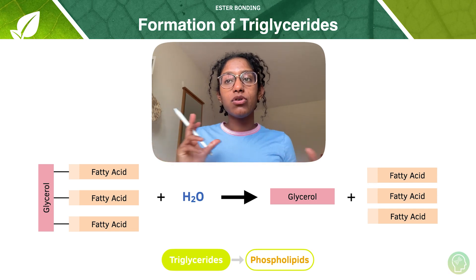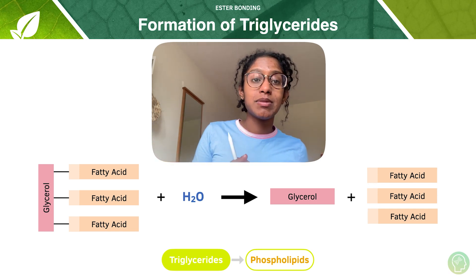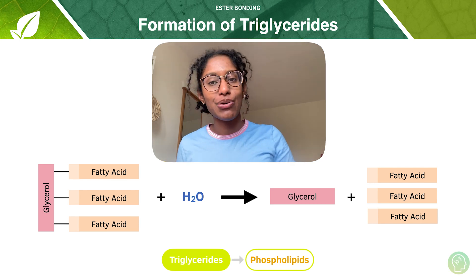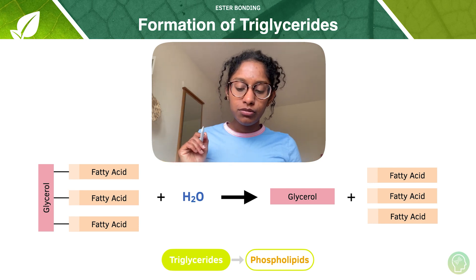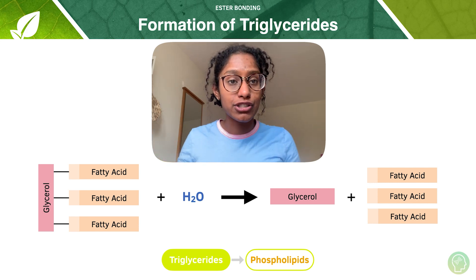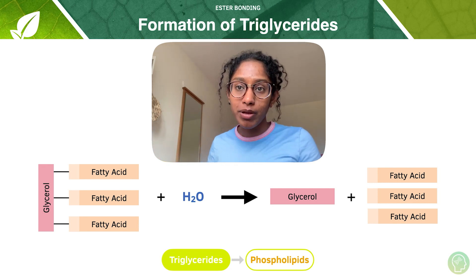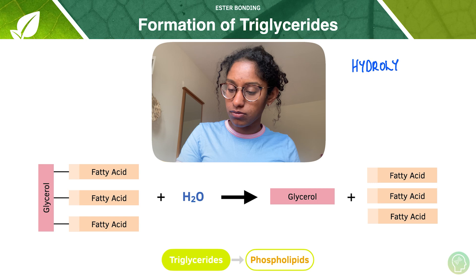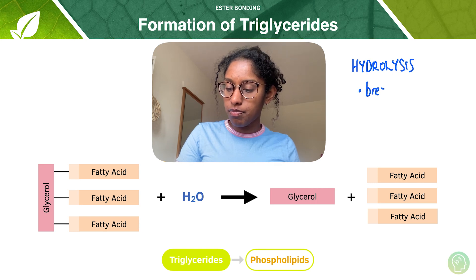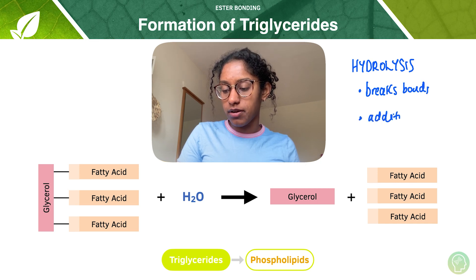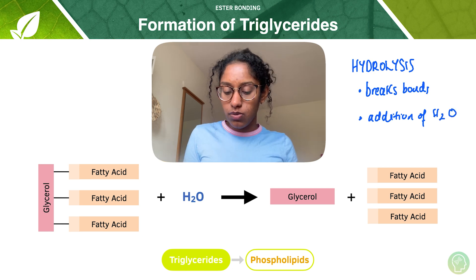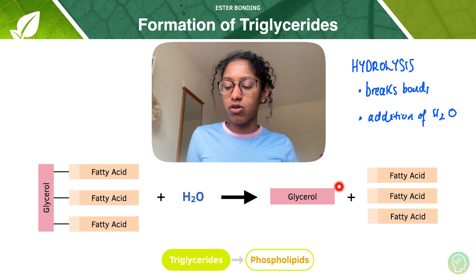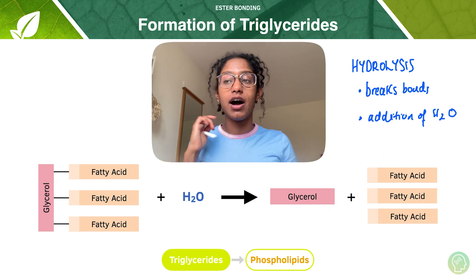Triglycerides are formed by condensation, which means that they are broken down by the reverse process: hydrolysis. If condensation involves the production of water as a result of bonds forming, hydrolysis breaks bonds with the addition of water. So we add water to our triglyceride, and that results in its breakdown to glycerol and fatty acids — this is via the process of hydrolysis.